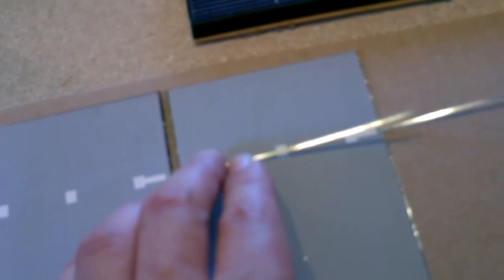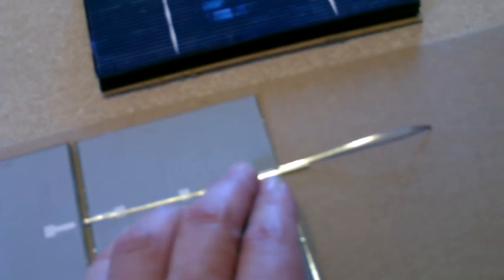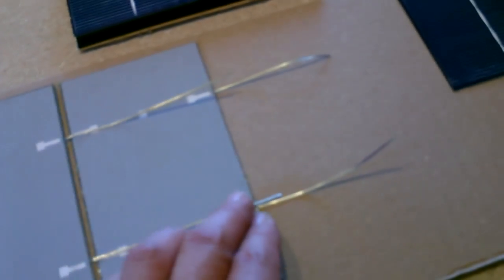Then there's going to be six solder joints. Just solder this negative tabbing wire here, here, and here, also here, here, and here. I'll show you that in a second. Then you just keep going. A few minutes later you'll have that. Encapsulate that behind some glass and you got a solar panel.